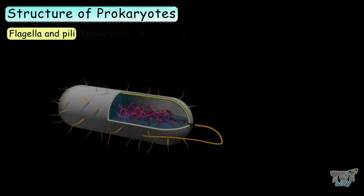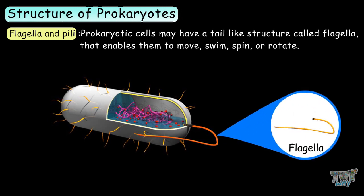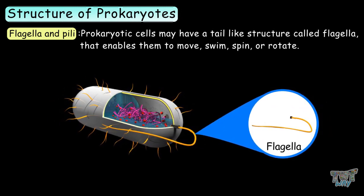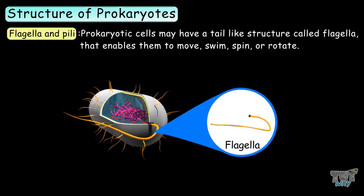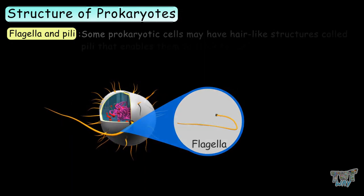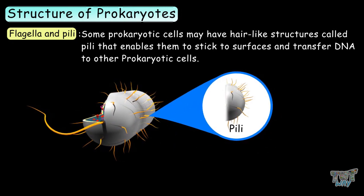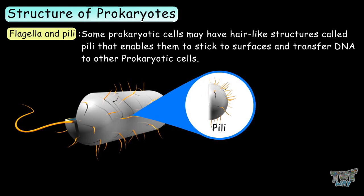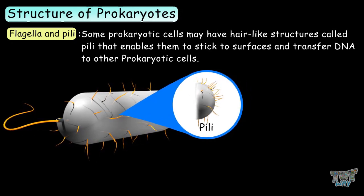Flagella and pili. Prokaryotic cells may have a tail-like structure called flagella that enables them to move, swim, spin, or rotate. Some prokaryotic cells may have hair-like structures called pili that enable them to stick to surfaces and transfer DNA to other prokaryotic cells.